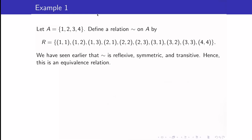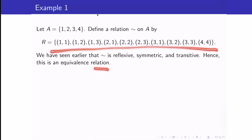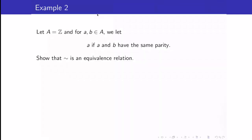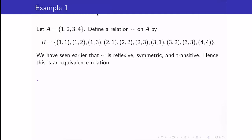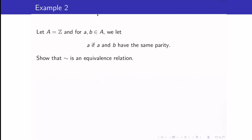We have seen in our last example of the previous video lecture that the relation given there is reflexive, symmetric, and transitive, but not anti-symmetric. But it's okay — we do not need the anti-symmetric property for a relation to be an equivalence relation. So, therefore, that example is an equivalence relation. We have another example we are all familiar with: the equality relation on ℂ is also an equivalence relation because it is reflexive, symmetric, and transitive.